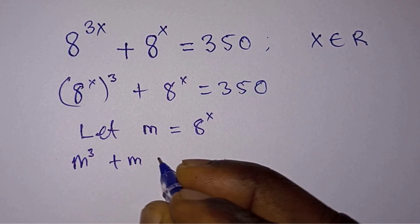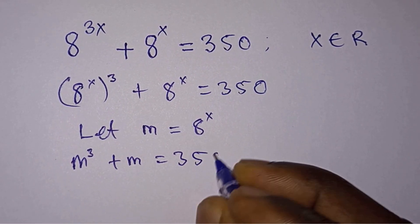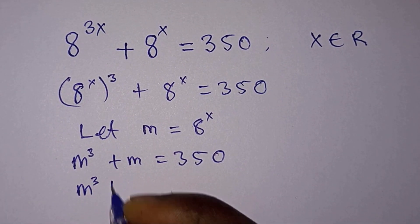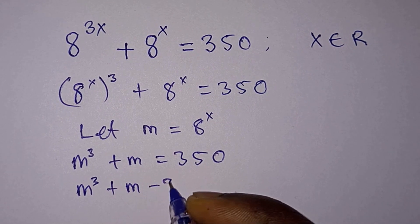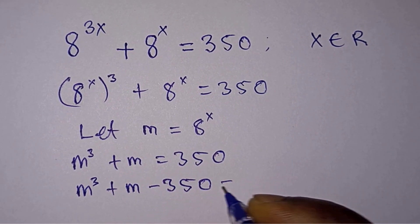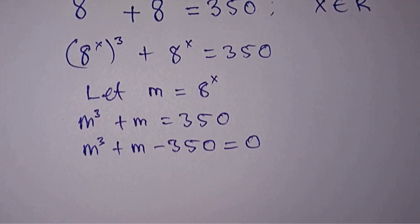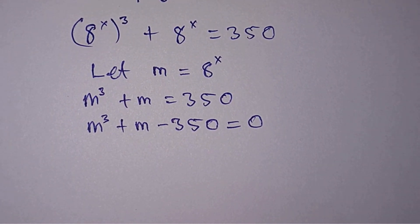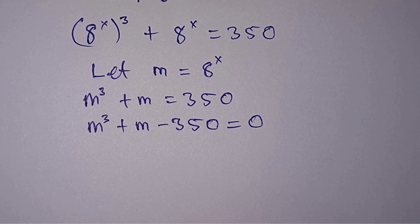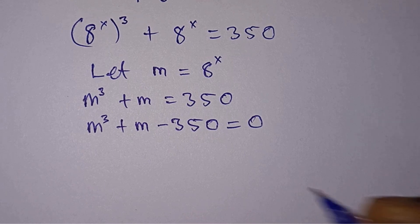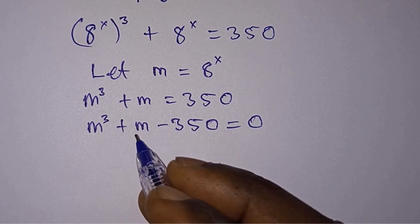Now let's equate everything to 0 by subtracting 350 from each side of the equation. So we'll get the right hand side to be 0, and now we have this cubic equation. So how do we solve this? Well, I'm going to apply some tricks here.